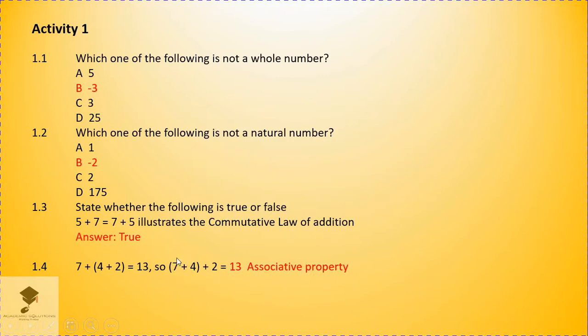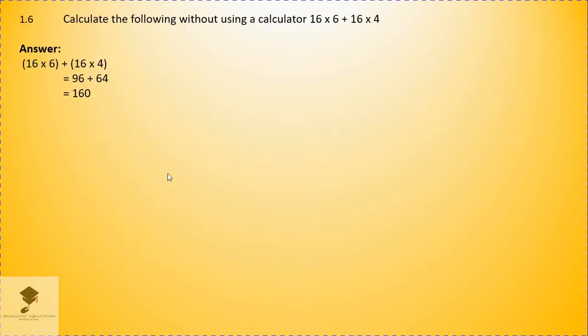So, in this case, we are going to add what's inside the bracket first. 7 plus 4, that will give us 11. Then, plus 2, that will give us 13. So, we are going to add what's inside the bracket, which makes this associative property.